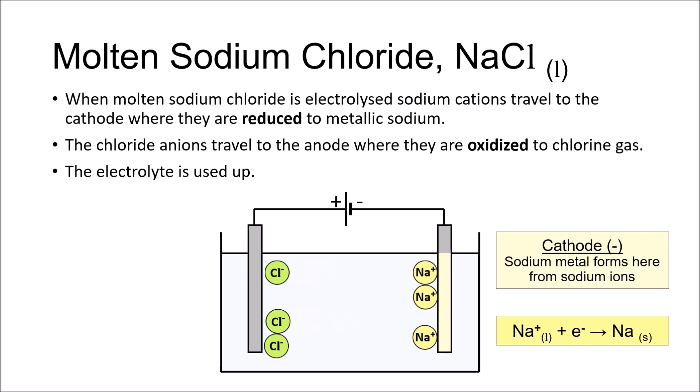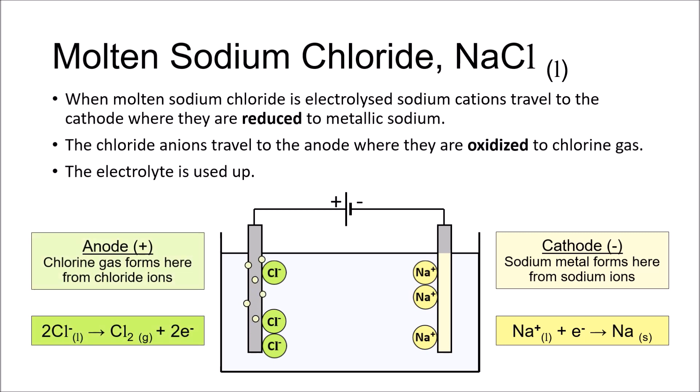The chloride anions travel to the anode, where each one is oxidized by losing an electron. For every two atoms of chlorine, a diatomic molecule of chlorine is produced and given off as a gas. Not a very cost-effective way of making chlorine, if I may say so.